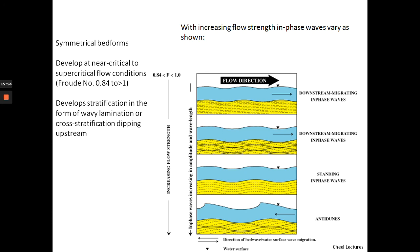Those are the main types of bedforms under unidirectional current flow: lower plane beds, ripples, dunes, and upper plane beds. Upper plane beds and dunes form at higher velocities, while ripples and lower plane beds form at lower velocities. But remember, you also need the right grain size.